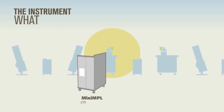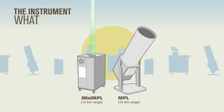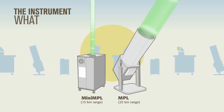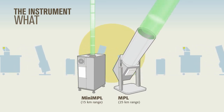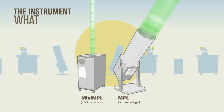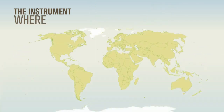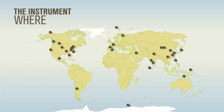Micropulse LiDAR, MPL for short, is a powerful yet compact and affordable LiDAR system designed to make world-class measurements of clouds and aerosol structure. Pioneering atmospheric scientists have taken MPL from pole to pole and everywhere in between to gather atmospheric data on the spot.